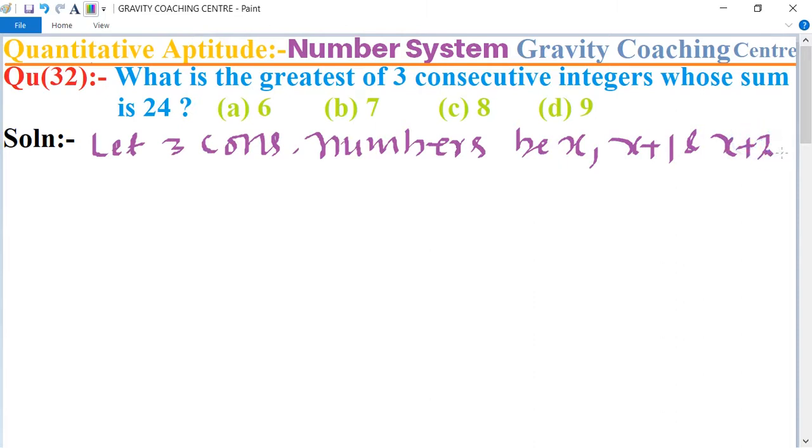And according to the question, their sum equals 24. So we add all the three numbers: x plus x plus 1 plus x plus 2 equal to 24.